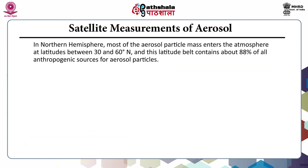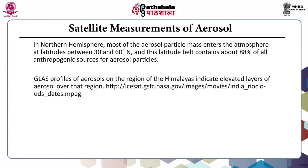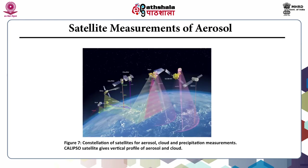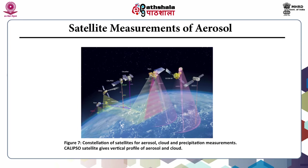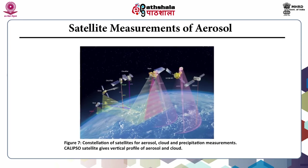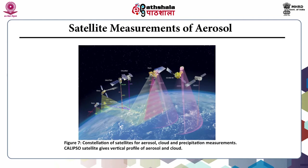In the northern hemisphere, most aerosol particle mass enters the atmosphere at latitudes between 30 to 60 degrees north, a belt containing about 88% of all anthropogenic aerosol sources. GLAS profiles over the Himalayan region indicate elevated aerosol layers over that region. A figure represents the constellation of satellites used for aerosol, cloud, and precipitation measurements.